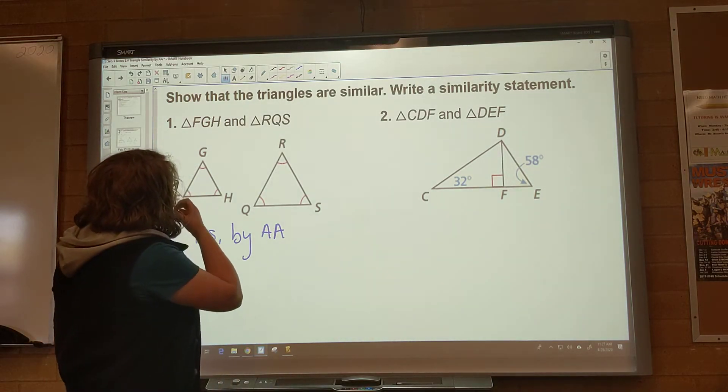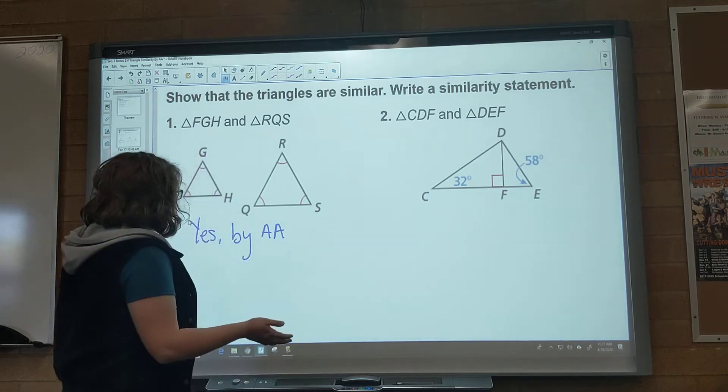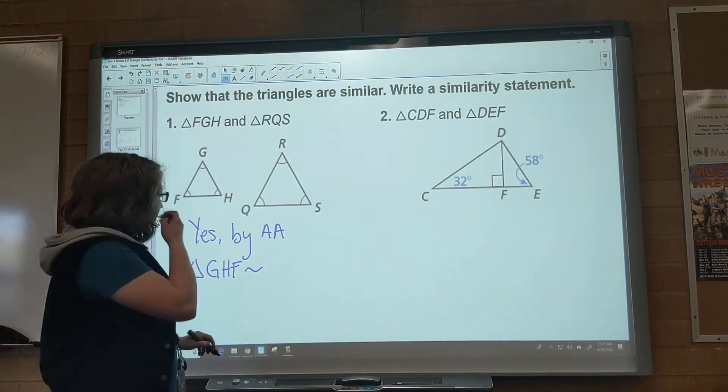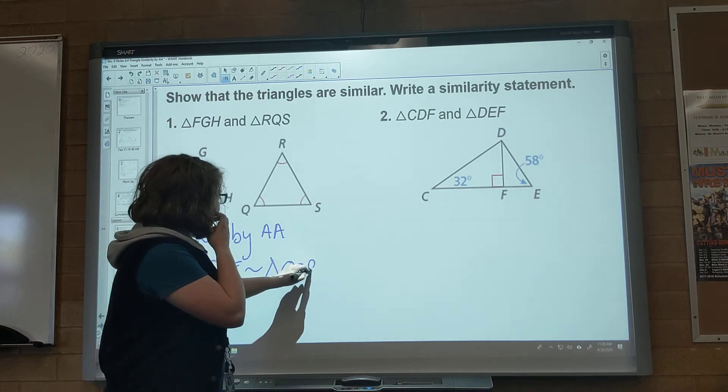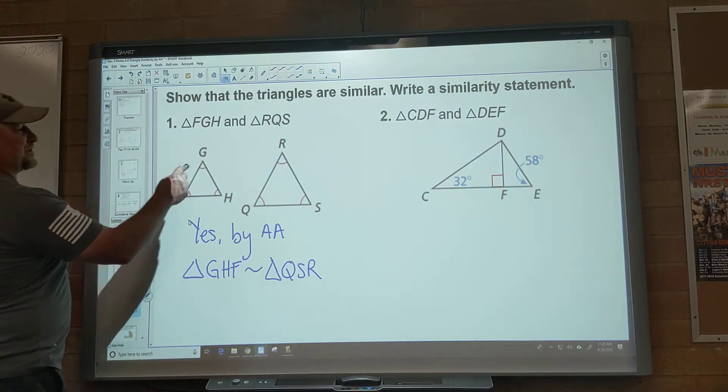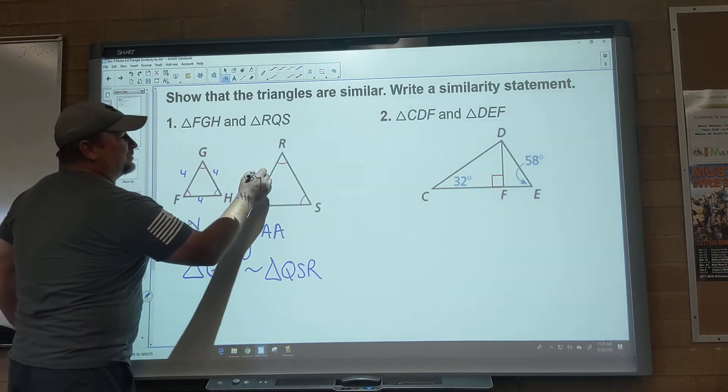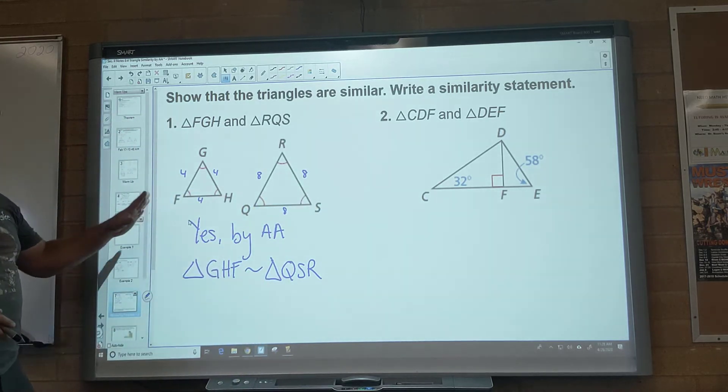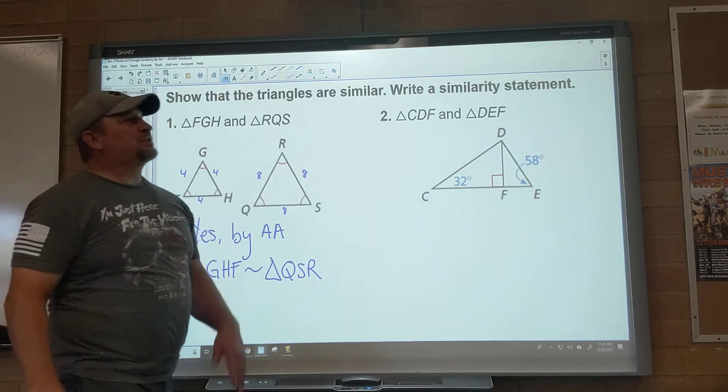Yeah. Cool. Okay. Yes by AA. So our similarity triangle. The cool thing about this is it doesn't matter how we order the angles at all because all of them match up. Does that make sense? So I could say, like I'm going to say triangle GHF is similar to triangle, and I'm just going to say QSR to be fun because they all match because they all have the same angle. And what's interesting about this one is you can tell this one's smaller. So like let's, let's pretend that this was four. Well, then this one's four, this one's four. But then let's say this one was eight. Well, this one's eight and that one's eight. That's what makes them similar to each other. The sides are proportional.